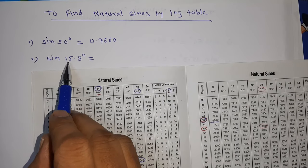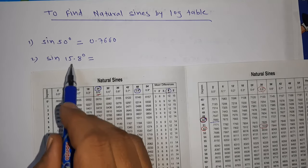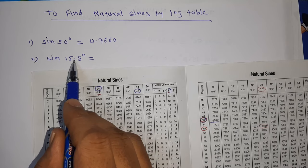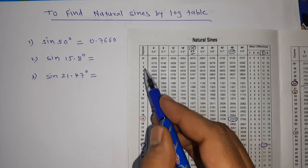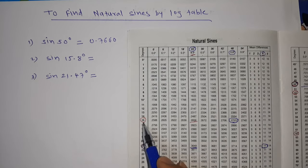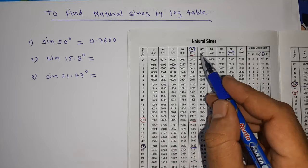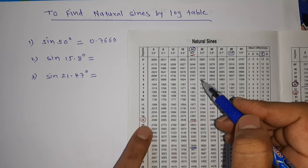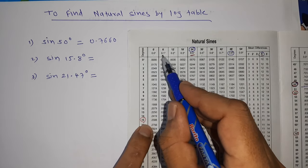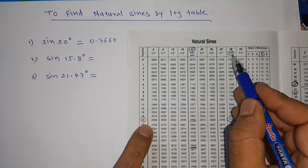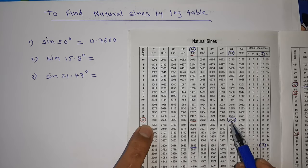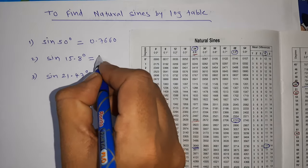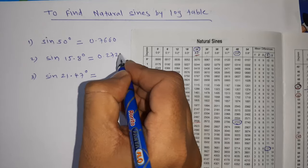Next, sine 15.8°. So we will see 15.8, where it is 15°. We will see in 0.8 - 15°, 0.0, here it is 0.1, here it is 0.8. So 15°, 0.8. The value is 2723. That is 0.2723.